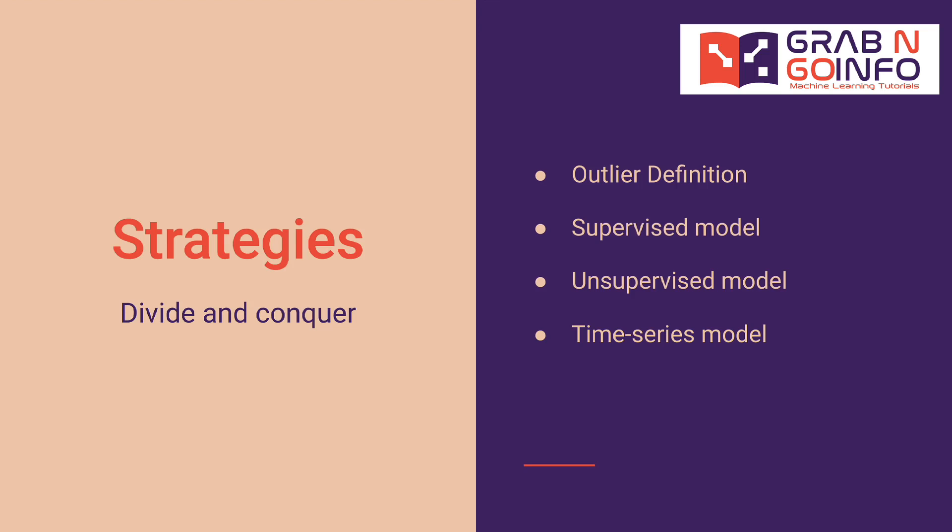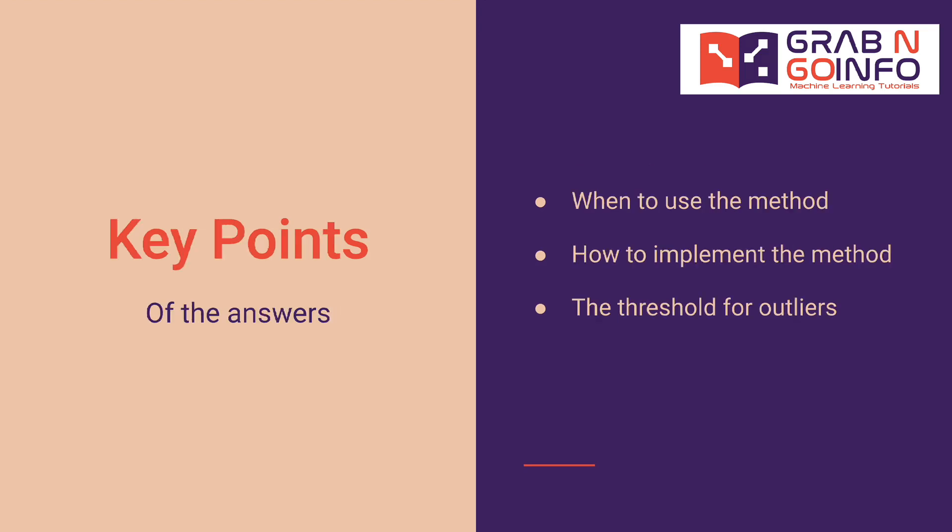The answer for each part includes three components: when to use the method, how to implement the method, and the threshold for outliers. When answering the question, make it a conversation instead of a presentation. First, give a one-minute summary of the answer, then wait for the interviewer to ask follow-up questions.